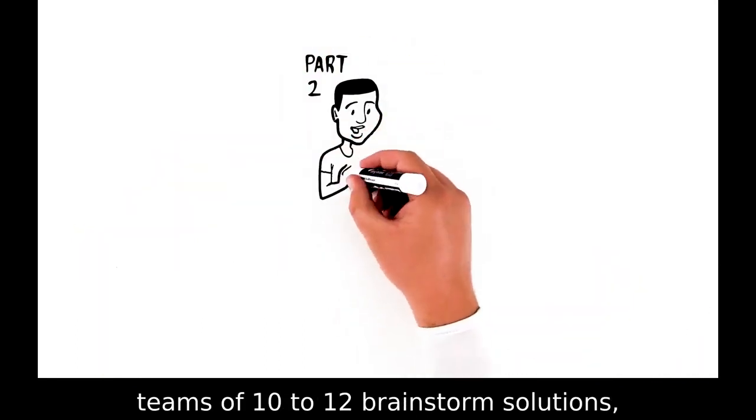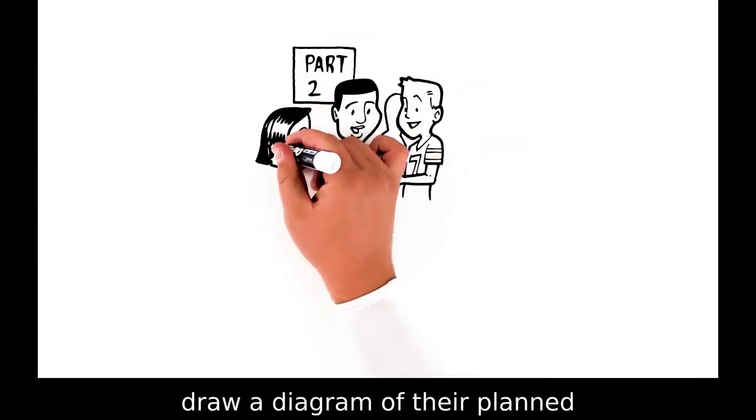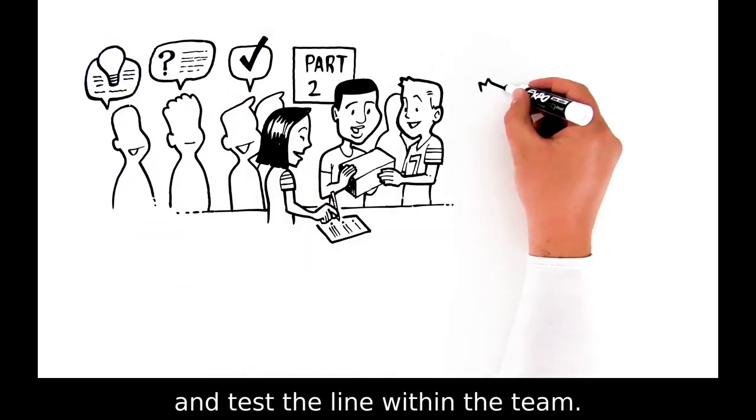During part two, teams of ten to twelve brainstorm solutions, draw a diagram of their planned assembly line design on paper, construct their assembly line, and test the line within the team.